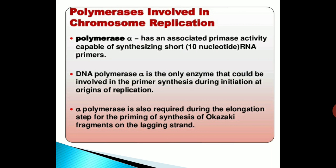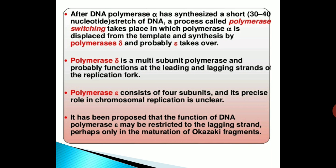Polymerase alpha has an associated primase activity capable of synthesizing short, approximately ten-nucleotide RNA primers. DNA polymerase alpha is the only enzyme involved in primer synthesis during initiation at origins of replication. Alpha polymerase is also required during the elongation step for priming the synthesis of Okazaki fragments in the lagging strand. After DNA polymerase alpha has synthesized a short 30 to 40 nucleotides of DNA, a process called polymerase switching takes place, in which polymerase alpha is displaced from the template and synthesis by polymerase delta and probably eta takes place.